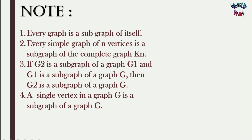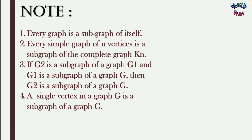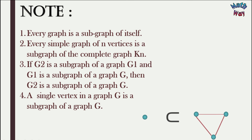Number four: a single vertex in a graph G is a subgraph of G. Consider a graph G — if we take a single vertex from it, it satisfies the first condition of subgraph since all its vertices and edges are present in G. For the second condition, there is no edge to check its endpoints. Hence a single vertex in a graph G is a subgraph of G.